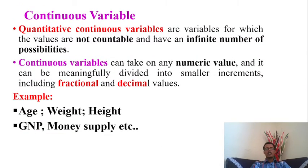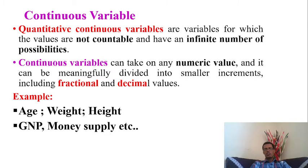This is a continuous variable — a continuous quantitative variable. Continuous quantitative variables are variables for which the values are not countable and have an infinite number of possibilities. Continuous variables can take on any numerical value and can be meaningfully divided into small increments, including fractional and decimal values. Examples include age, weight, and height. These variables are measurable rather than countable, making them continuous quantitative variables.